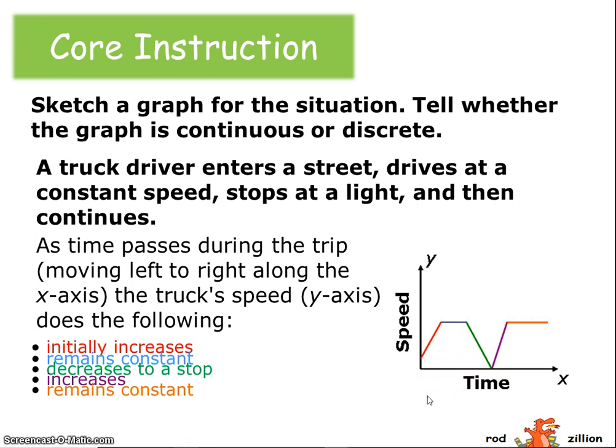Now, is this a continuous or discrete graph? Well, it's a line, which means it contains all those points between the data points. So it is obviously a continuous graph.